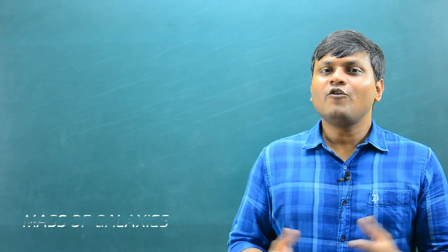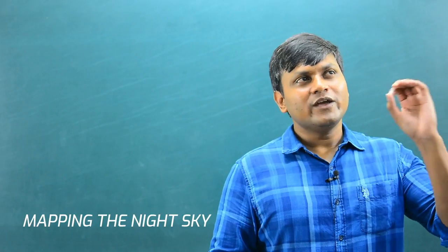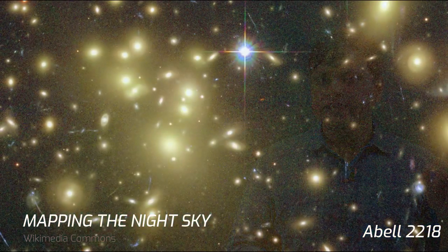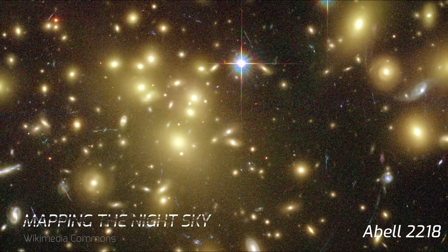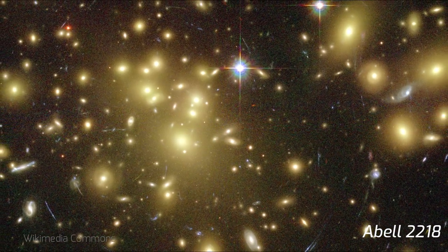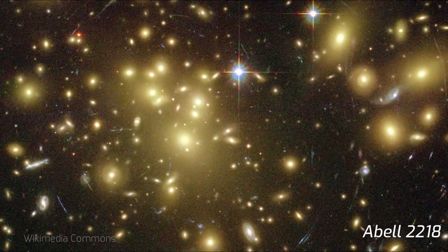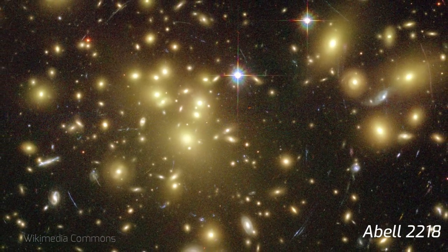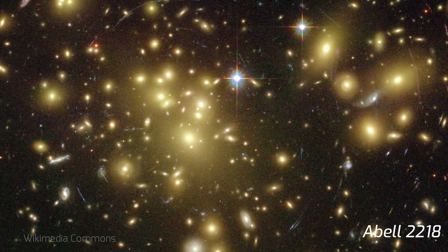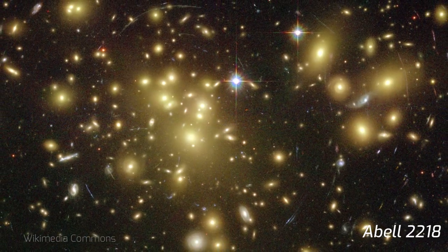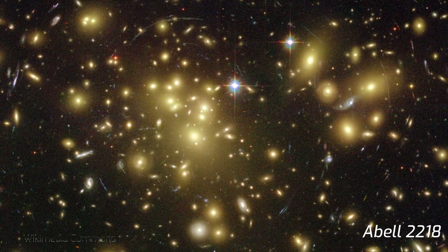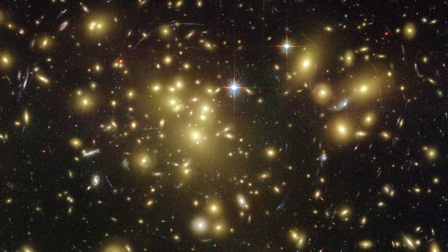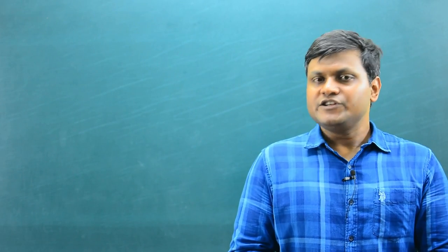Another application is mapping the night sky. Telescopes see billions of galaxies and stars, but many of these images are shifted, distorted, or are actually multiple images of the same object. Having an idea of gravitational lensing can help astronomers map the actual positions of various stars and galaxies in the night sky.